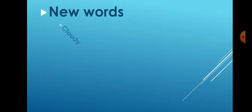First, write today's date on a new page in your notebook, then write the name and number of the chapter — chapter number 13, 'The Season'. Then write Roman numeral one and the heading 'New Words'. The first new word is 'cloudy' — C, L, O, U, D, Y.